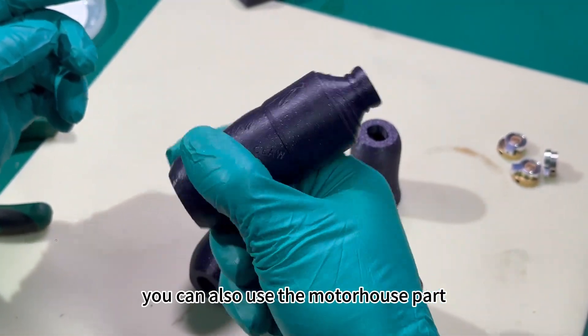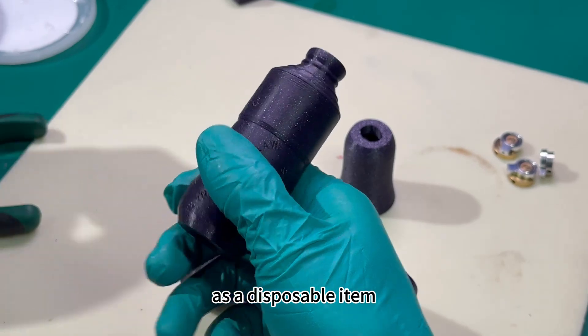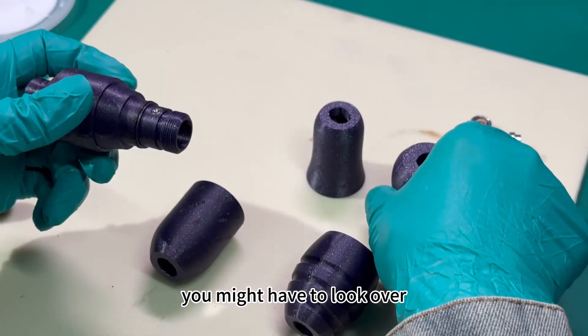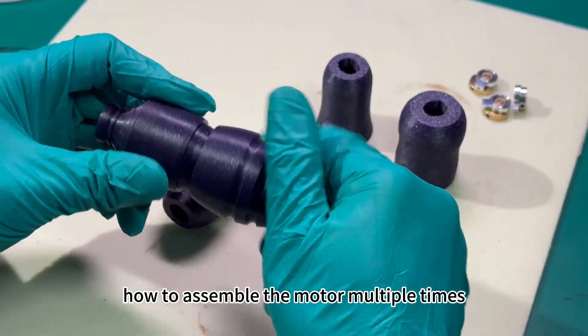You can also use the motor house part as a disposable item. If you want to dispose of the motor frame part, you might have to review how to assemble the motor multiple times.